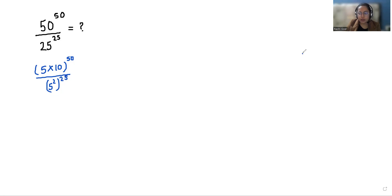Now according to the exponent rule x times y power m, we can write it as x power m times y power m. So similarly we can write this as 5 power 50 times 10 power 50.